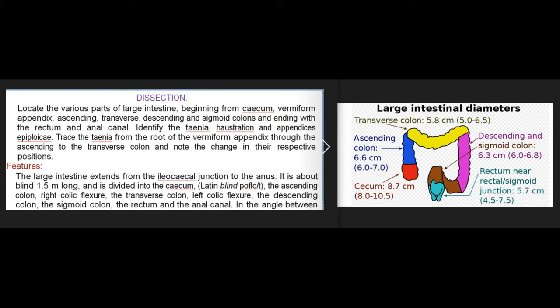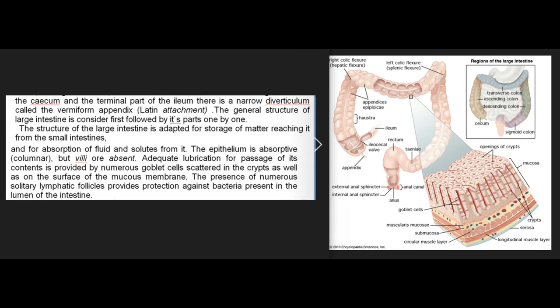In dissection of the large intestine, locate the various parts beginning from the cecum, vermiform appendix, ascending, transverse, descending, and sigmoid colons, ending with the rectum and anal canal. Identify the tenia coli, haustrations, and appendices epiploicae. Trace the tenia from the root of the vermiform appendix through the ascending to the transverse colon and note the change in their respective positions. The large intestine extends from the ileocecal junction to the anus, is about 1.5 meters long, and is divided into the cecum, ascending colon, right colic flexure, transverse colon, left colic flexure, descending colon, sigmoid colon, rectum, and anal canal.